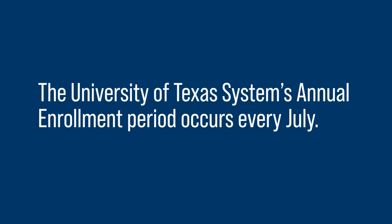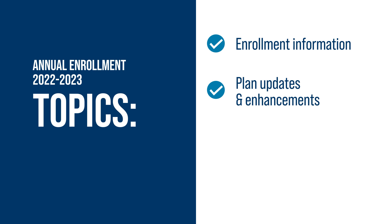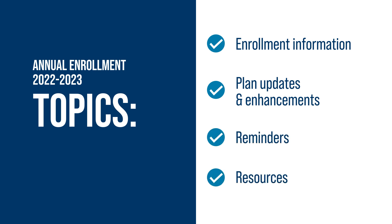The University of Texas System's annual enrollment period occurs every July. In this video from the Office of Employee Benefits, we'll talk about Plan Year 2022-2023's annual enrollment. You'll learn about enrollment information, plan updates and enhancements, reminders, and resources.